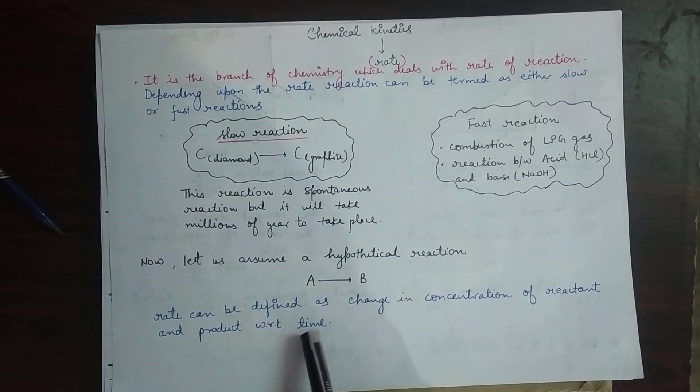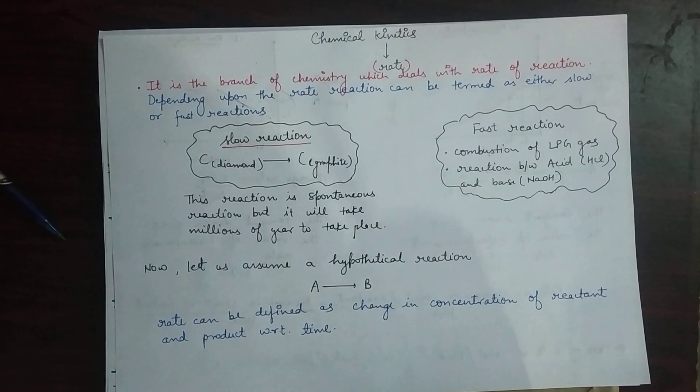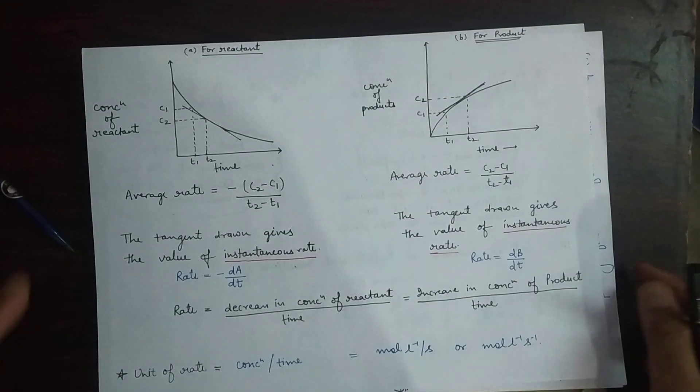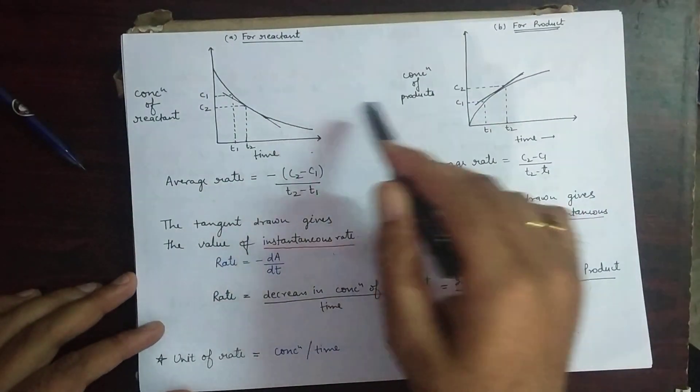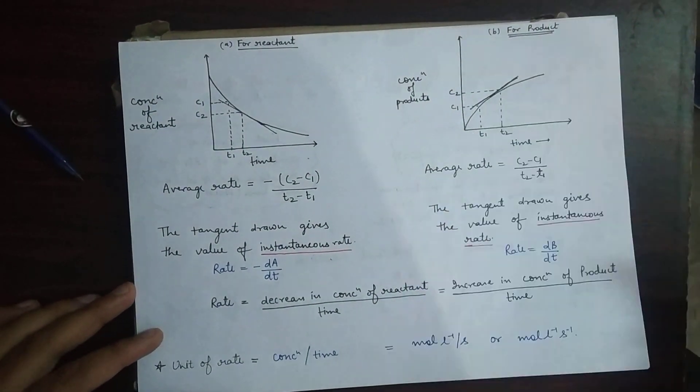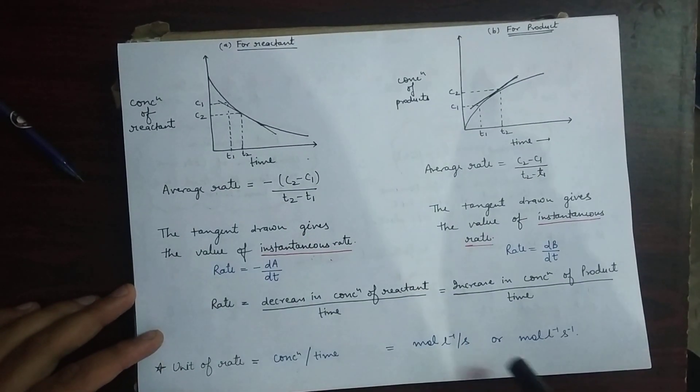Now let's see by the graphical method how the rate is dependent on the concentration. Here I have drawn the graph of both reactant and on the other side that is of product. For reactant, I...